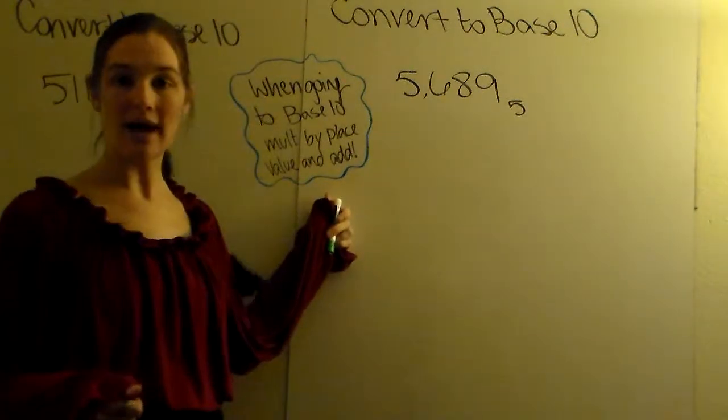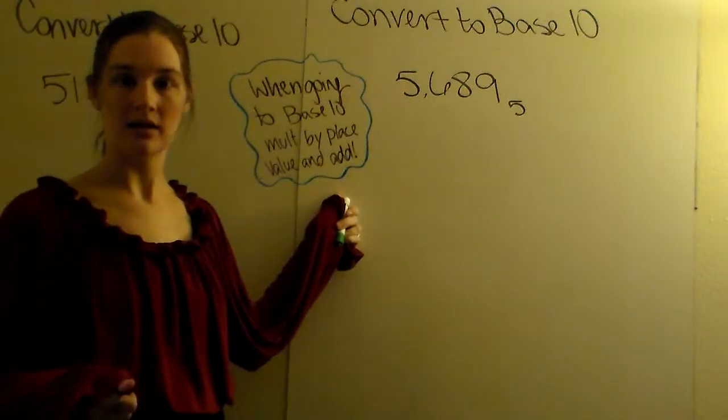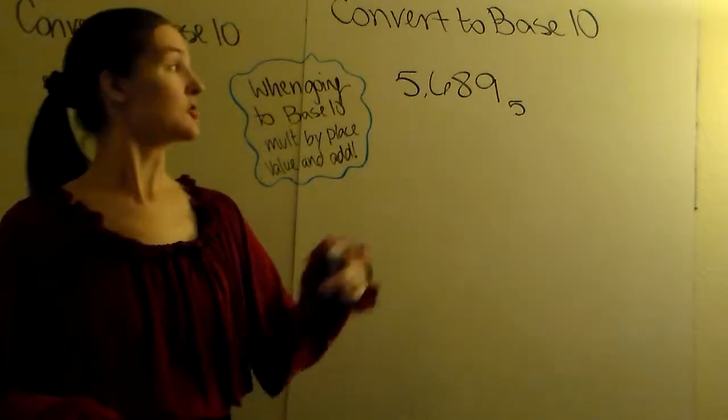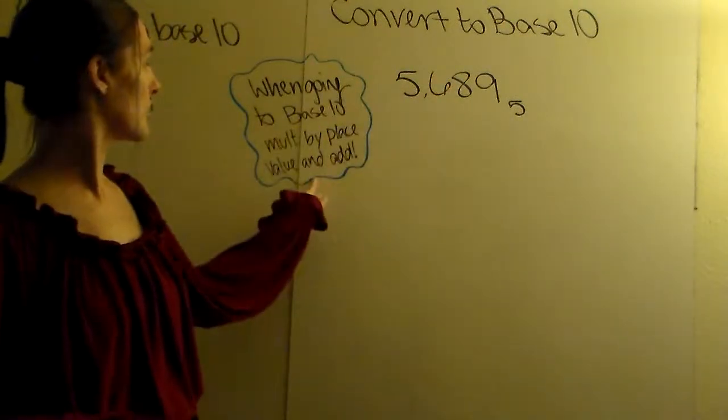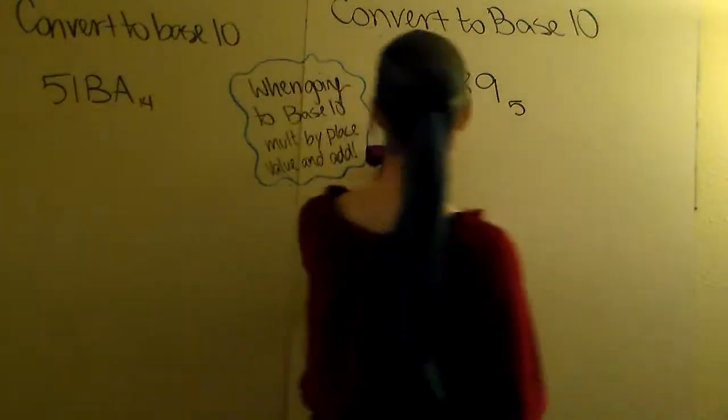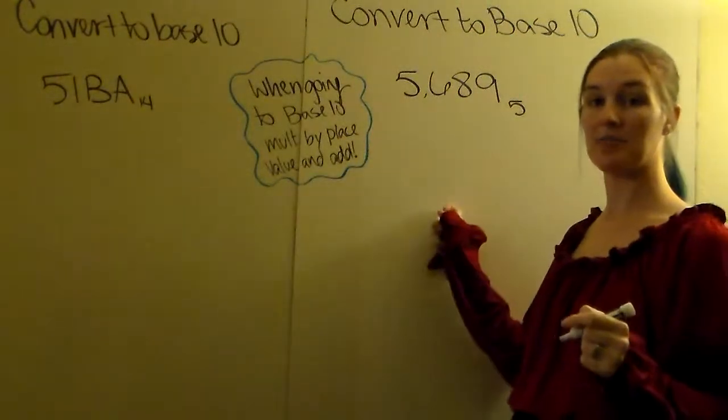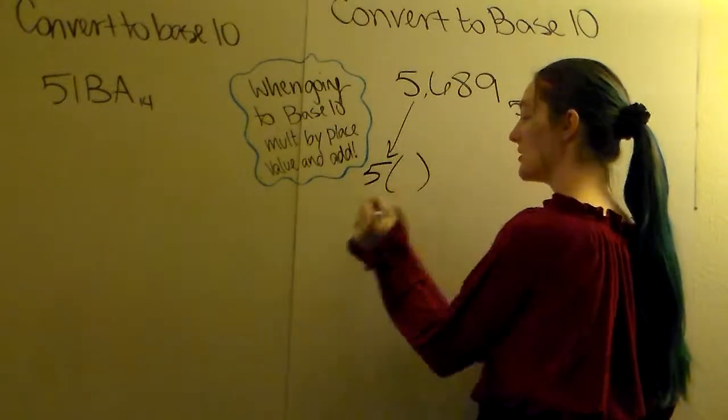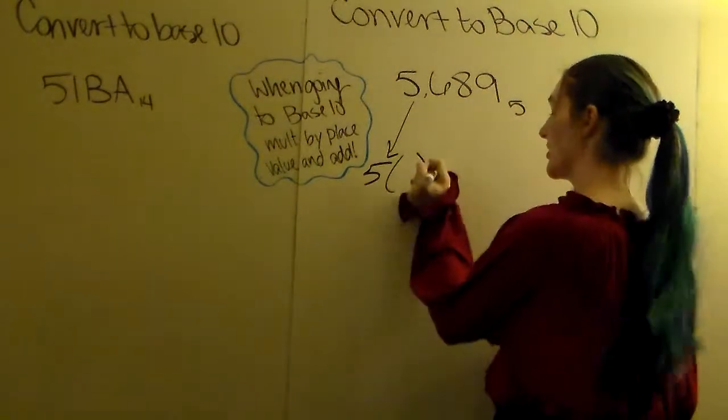So it's going to be the easier way, the shorter way, to go to base 10 than it is to go away from base 10. So we're going to base 10. We're going to multiply and add. So each of these numbers for 5,689 base 5, we're going to keep each of these numbers, and we're going to multiply it by a place value.